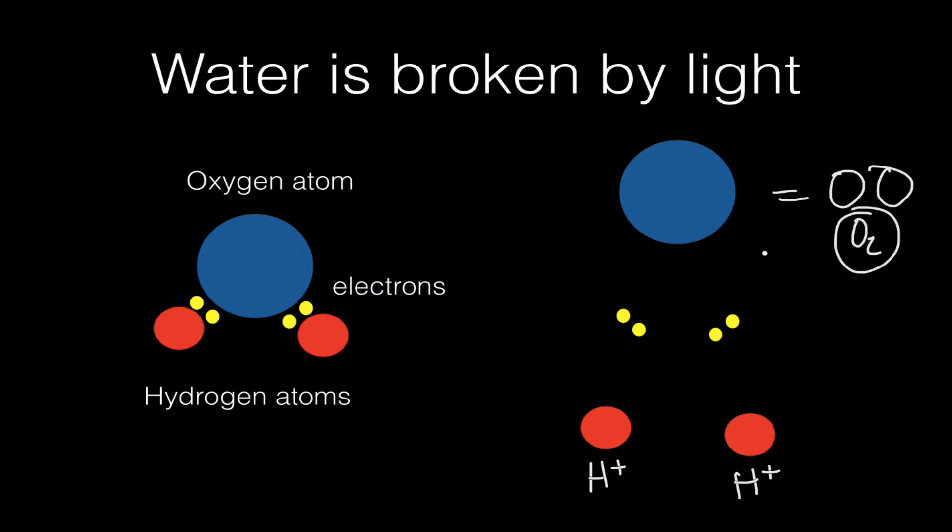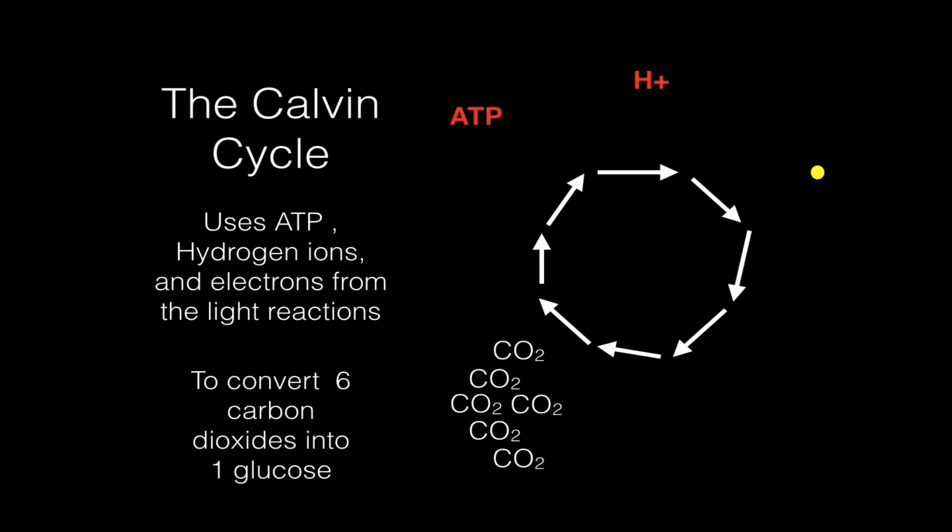All right, now the Calvin cycle is the second part of the light reactions and it is powered by the products of the light reactions. The Calvin cycle uses ATP, hydrogen ions, and those free electrons, which are coming from the light reactions, to convert six carbon dioxide into one glucose. So I'm going to try to animate this and see if you can see how it works.